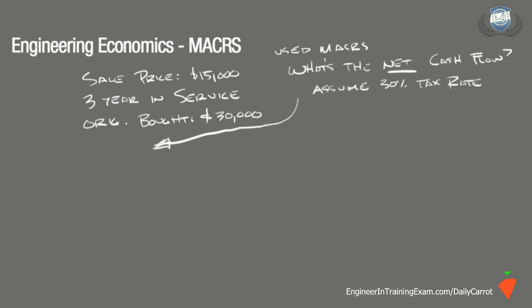Assume a 30% tax rate. So here's the solution. The goal is to determine what the overall cash flow coming back to the company will be after selling the piece of equipment. This equipment was purchased for $30,000 and sold after 3 years for $15,000. Taking into account that MACRS was used for the depreciation schedule and that any profit made from the sale was liable to be taxed at 30%, we can determine the net cash flow.